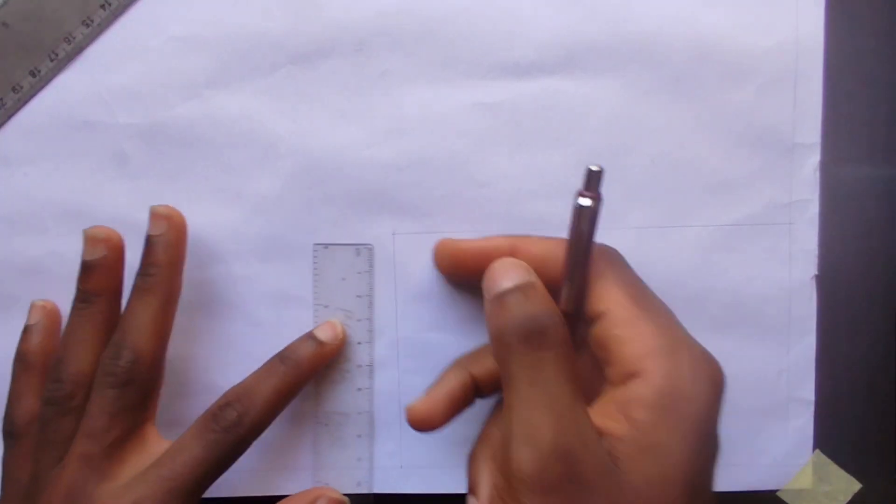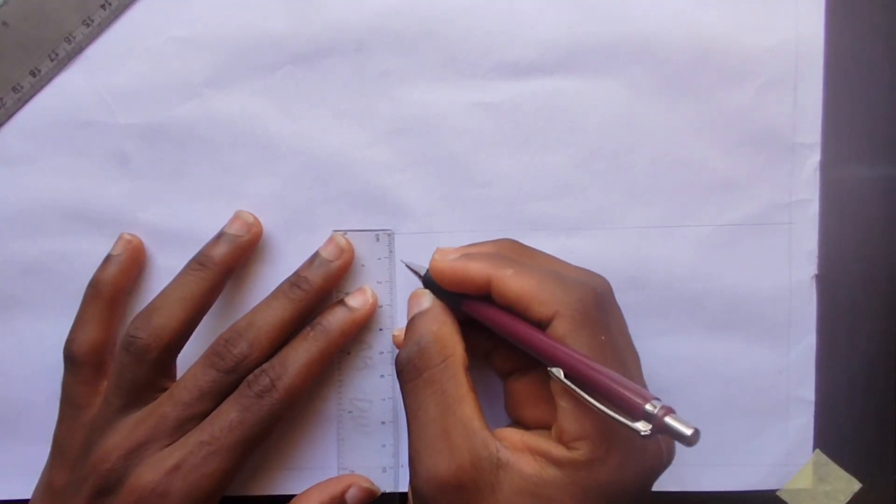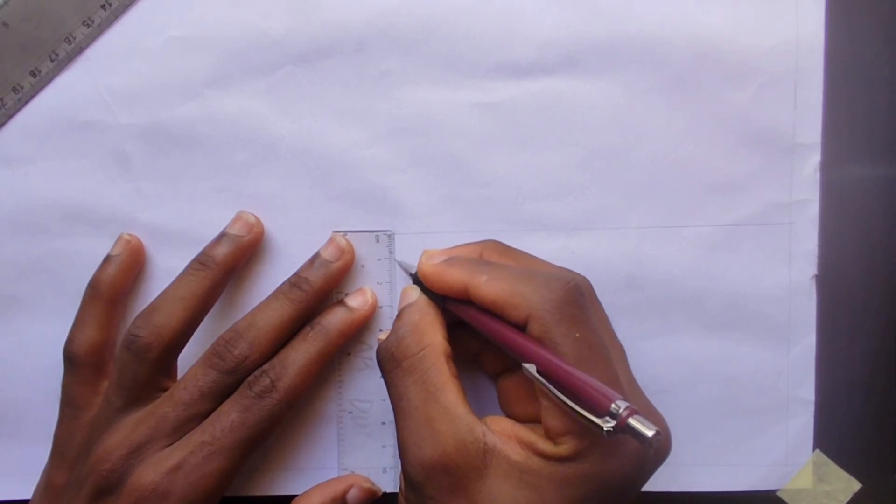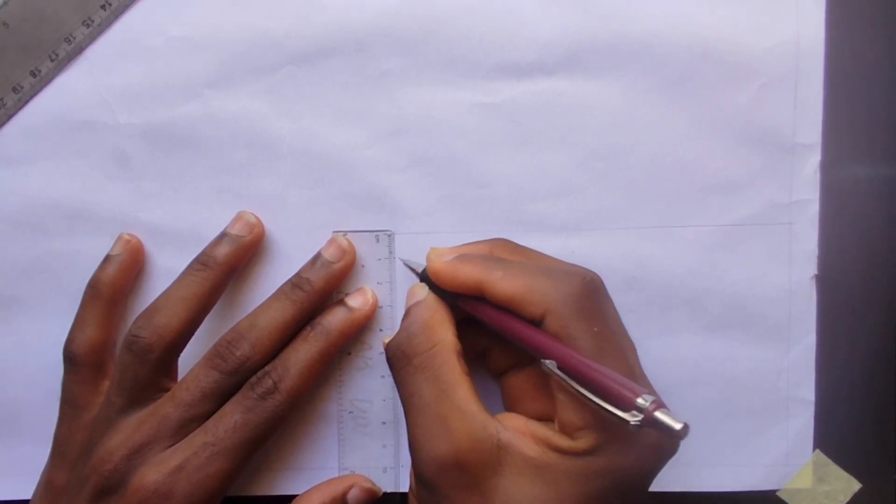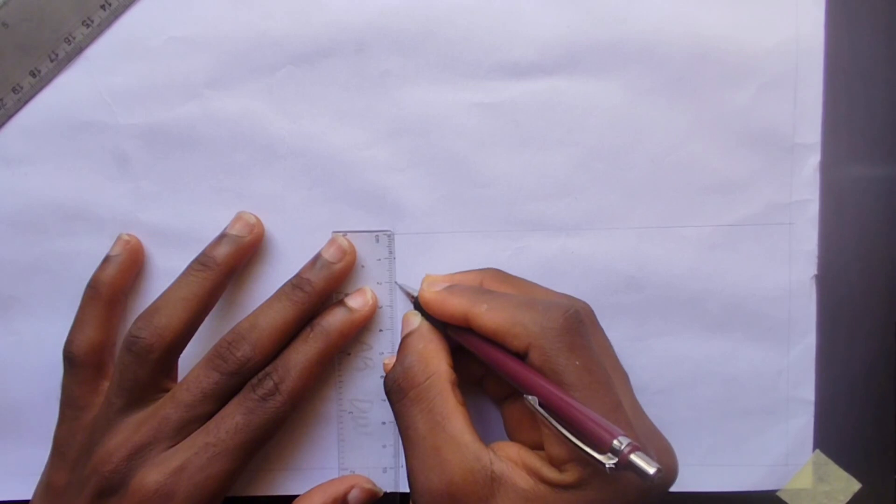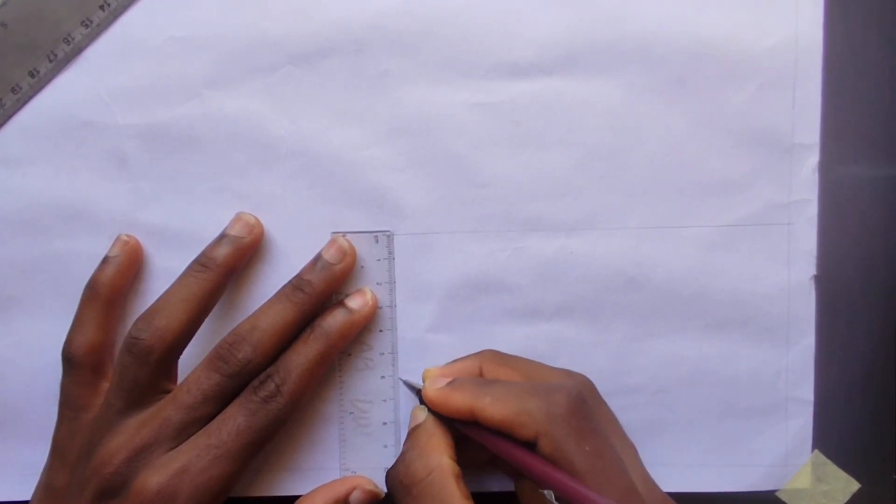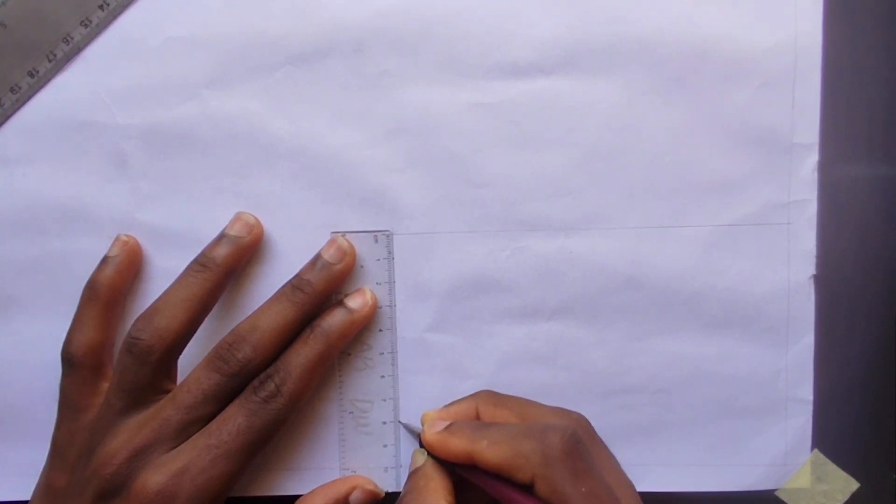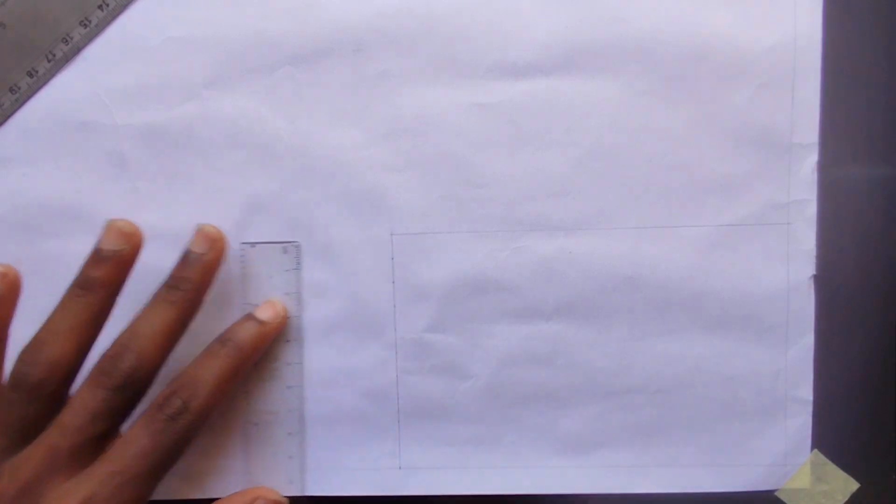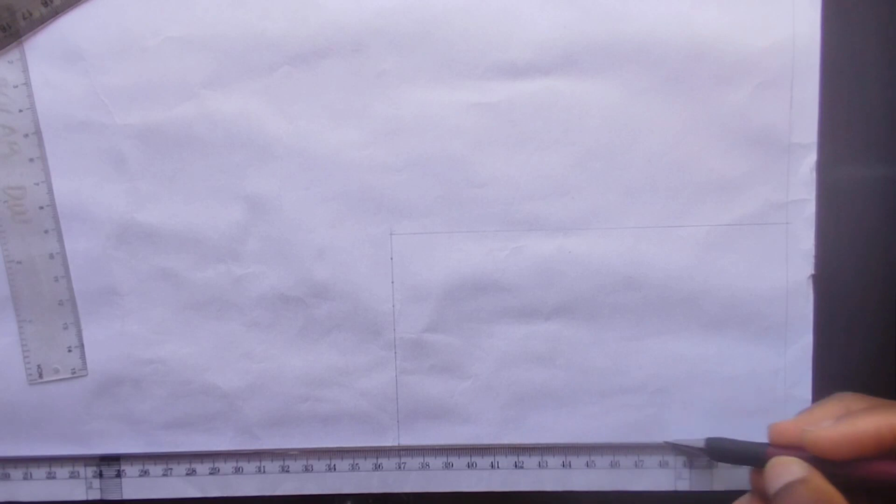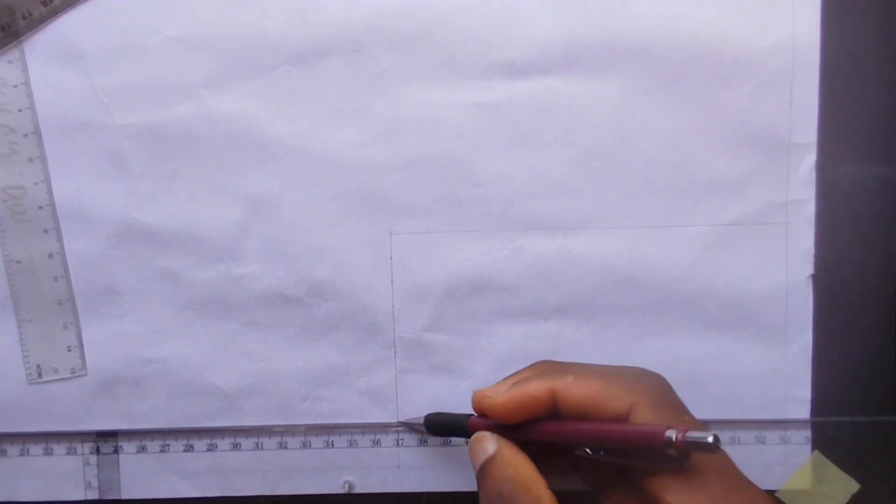So now we are going to be dividing this box by 10mm, that's 1cm. So we pick our 1cm like this. So now we draw our line using our T square to this edge.